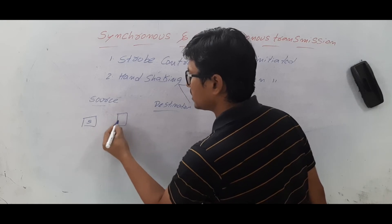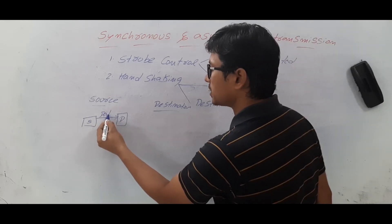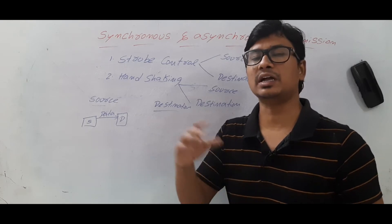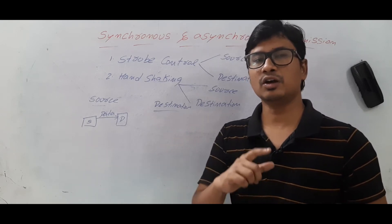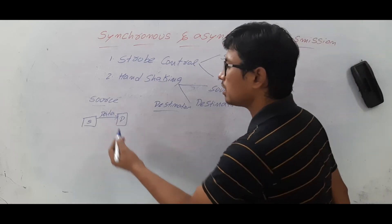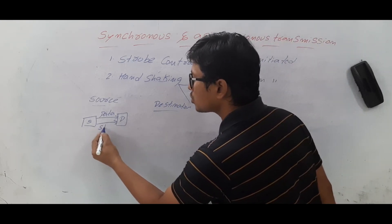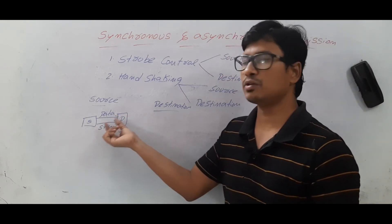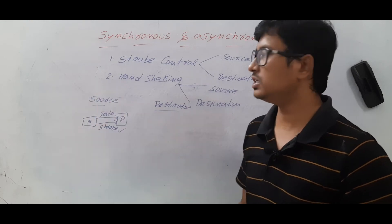We have a source and a destination. Step one: the source sends the data using the data bus. As you know, we have an address bus, data bus, and control bus. The address bus transfers addresses, the data bus transfers data, and the control bus transfers control signals. Once the data starts transmitting, the source sends a signal called the strobe signal to the destination. The purpose of the strobe signal is to inform the destination that the source has started transferring data and it should receive it. This is called the source-initiated strobe signal.